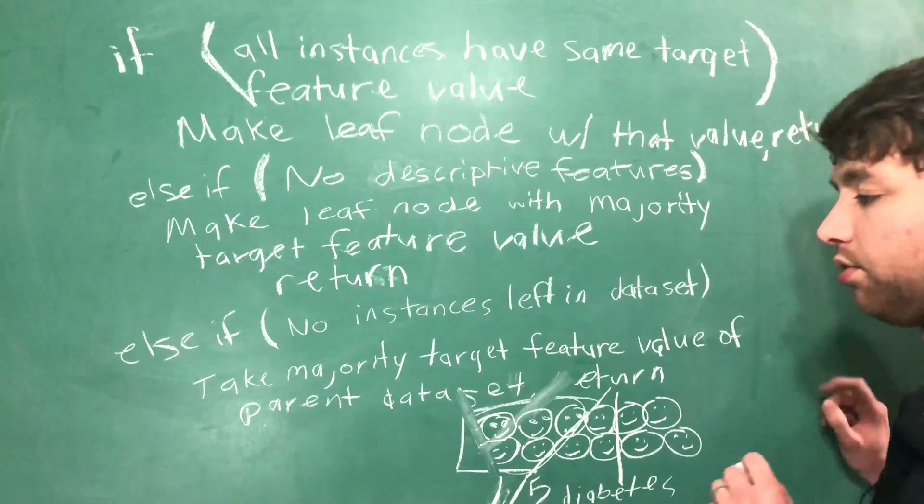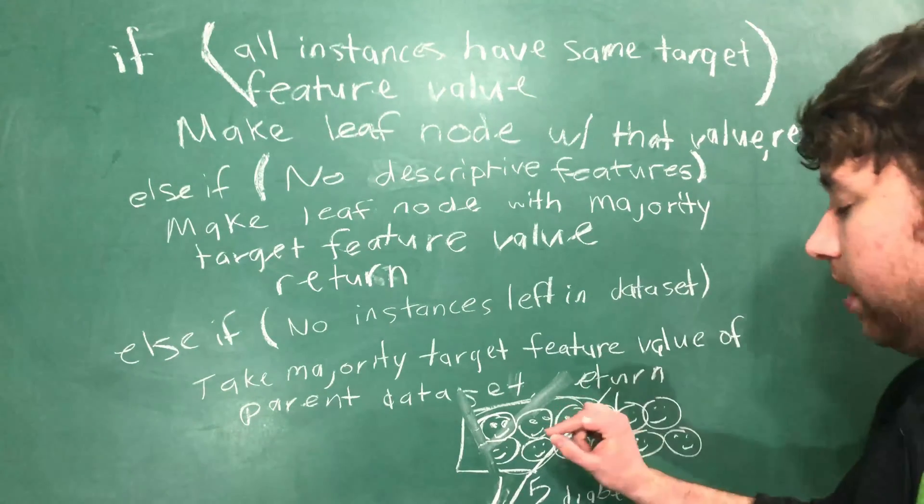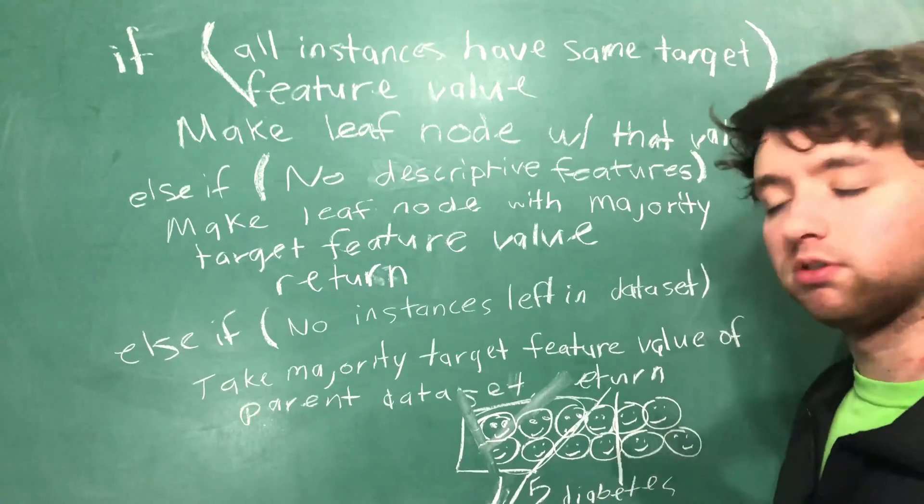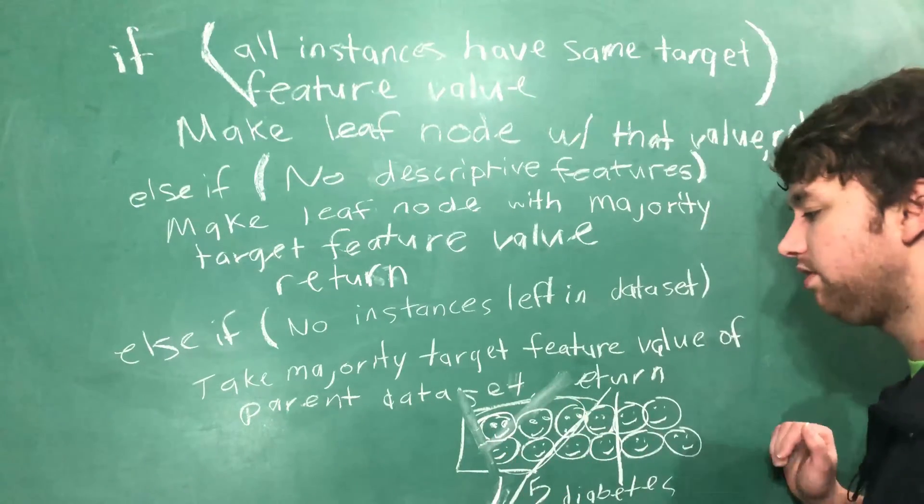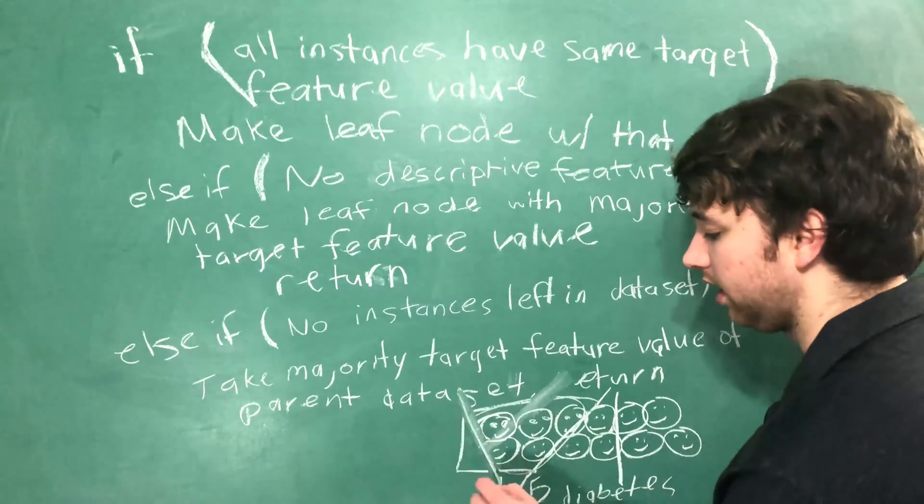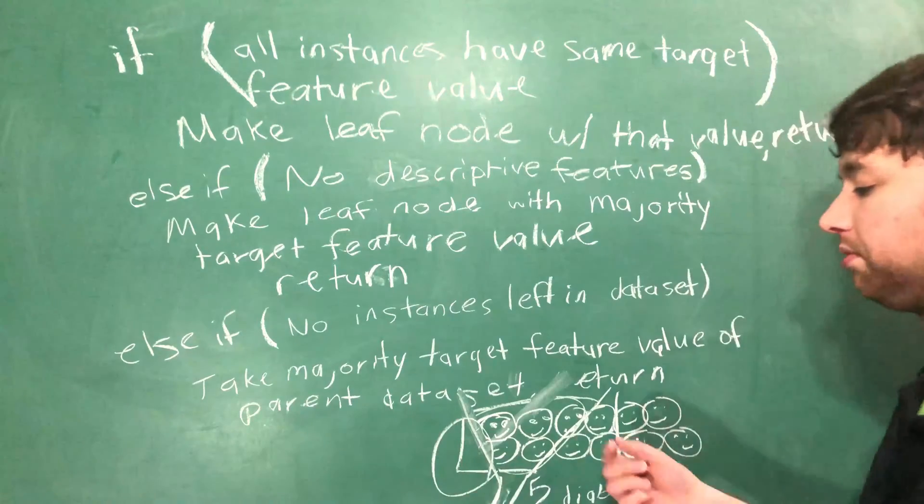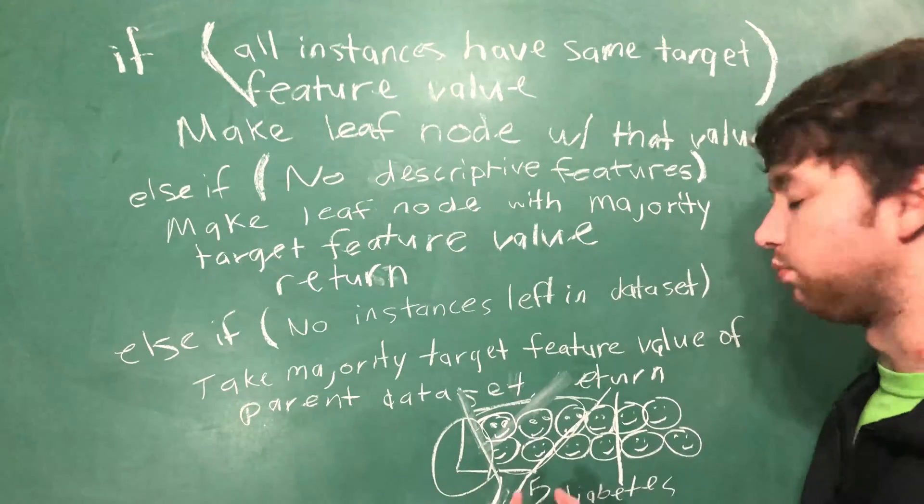The ability to generalize is seen because even though we don't have anyone in this group, we're able to make a likely prediction on what they will have.